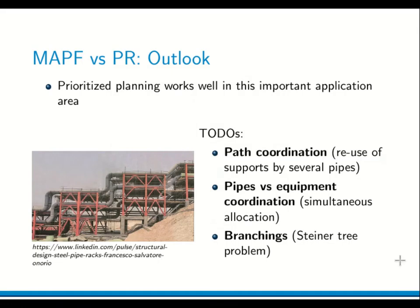As a conclusion, prioritized planning seems to work well in this area where savings can mean huge dollar amounts. As an outlook, there are several open points: path coordination where support structures are used by many pipes, simultaneous allocation of pipes and equipment, and pipes with junctions which lead to a Steiner tree problem. We hope this opens a new interesting research direction.